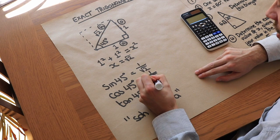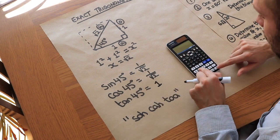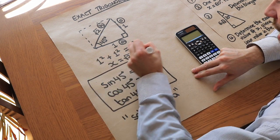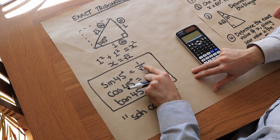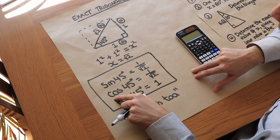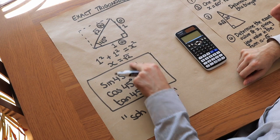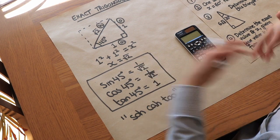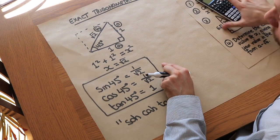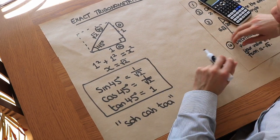Let's just check on the calculator: tan of 45 degrees gives 1. So these are exact trigonometric values — we get a nice value for sine, cos, and tan of 45 degrees that can be expressed exactly without infinitely many digits.